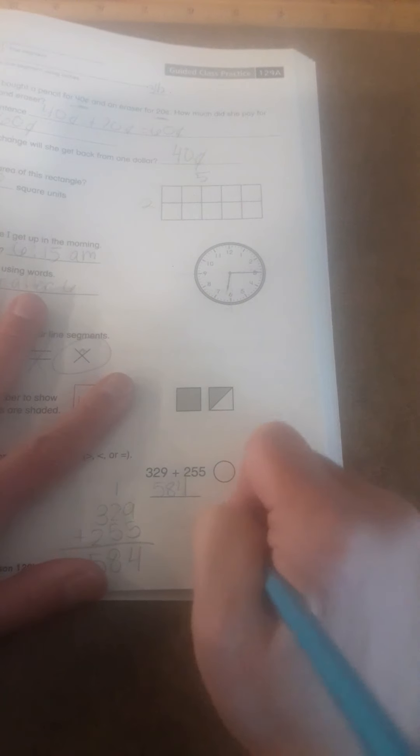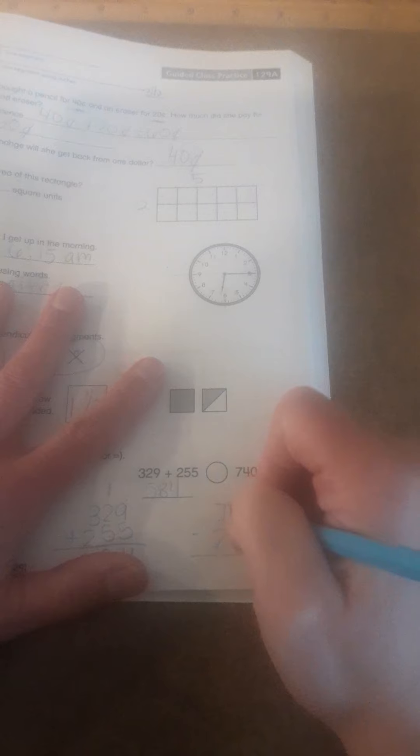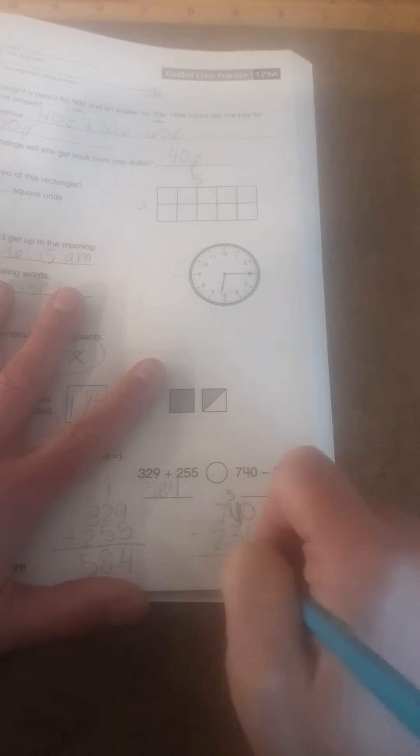And now I need to do 740 minus 236. 0 minus 6, more on the floor, go next door, borrow 10 more. 4 becomes a 3, 0 becomes a 10. 10 minus 6 is 4. 3 minus 3 is 0. 7 minus 2 is 5.